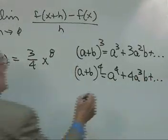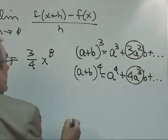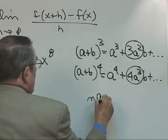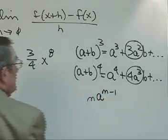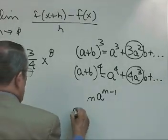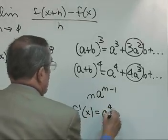And you'll notice something here. You'll notice that this is an n times a to the n minus 1. So using the power rule, what would the derivative of a to the 4th be?